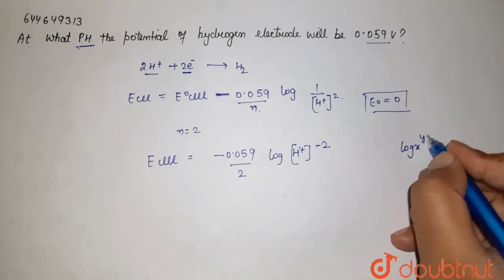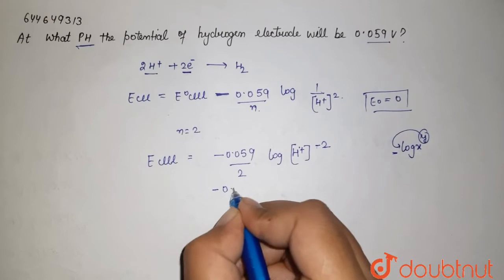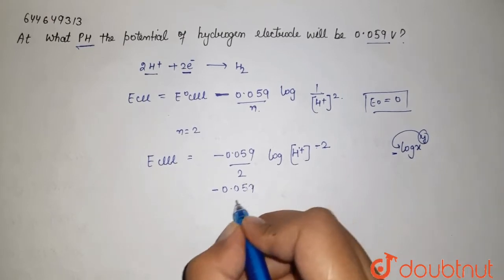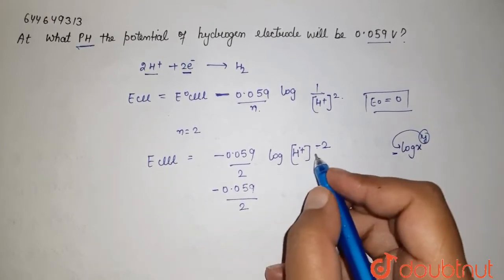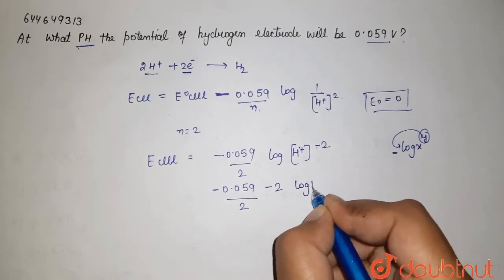2, and the -2 exponent comes in front, giving us times minus 2 times log [H⁺]. Since this -2 is in multiplication, it cancels with the 2 in the denominator,